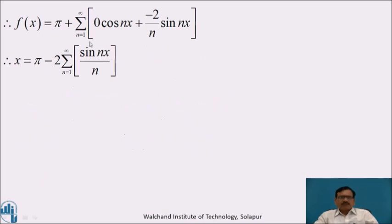By simplifying, we get the Fourier series of the given function f(x) = x.